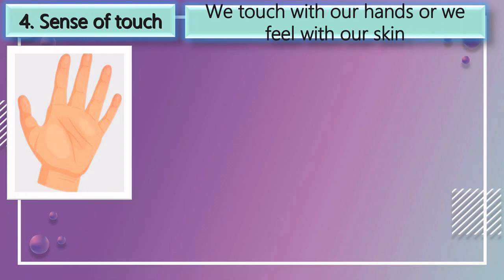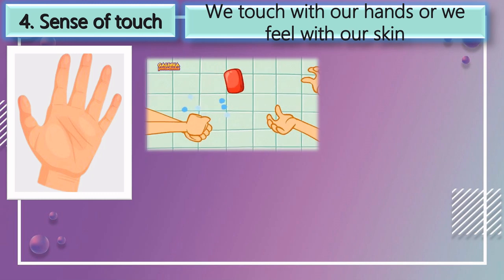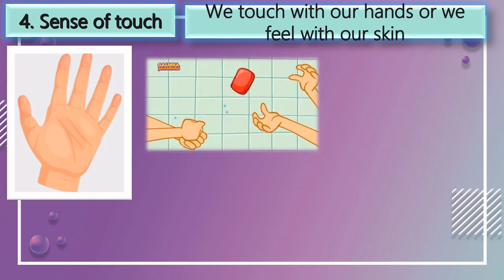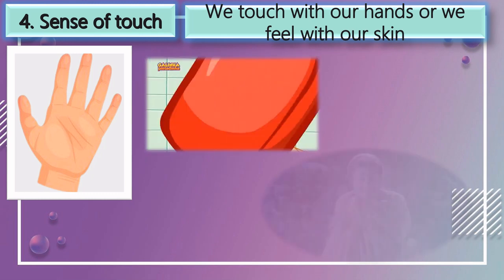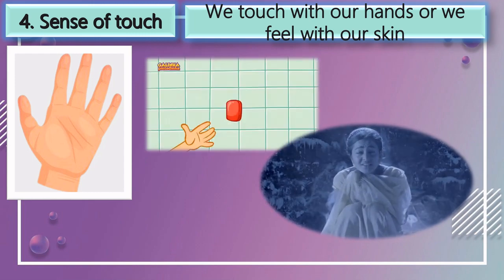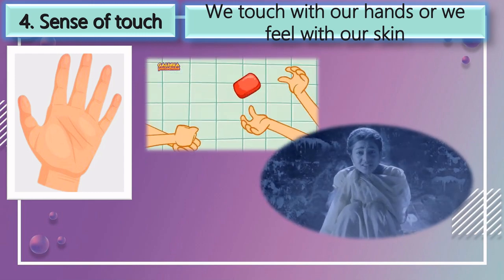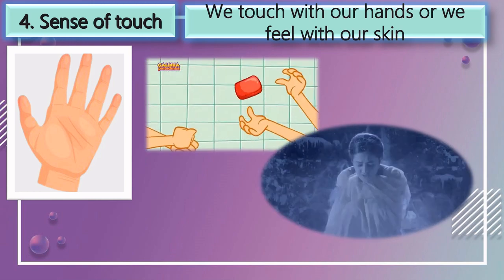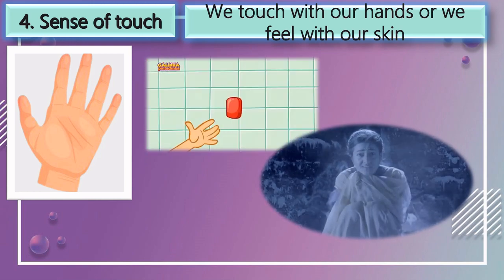We touch with our hands, or we feel with our skin. For example, we can feel that soap is slippery. Our next example is because of cold weather, Auntie is shivering and she needs a blanket.